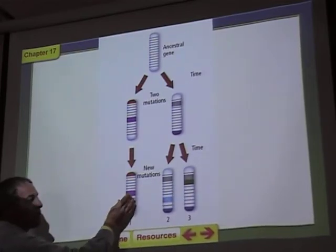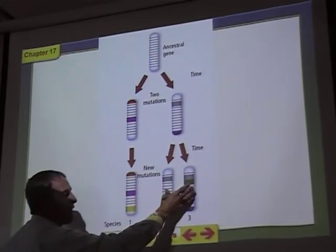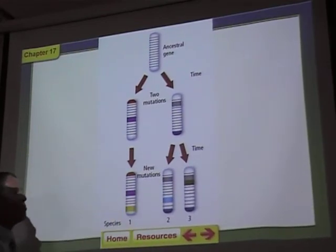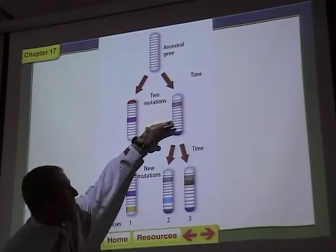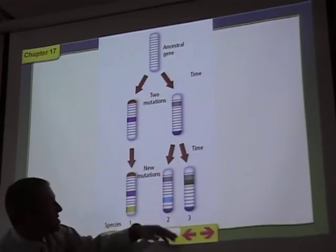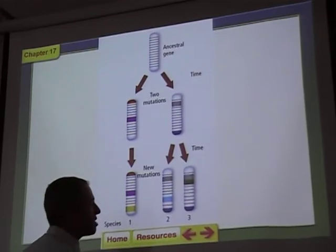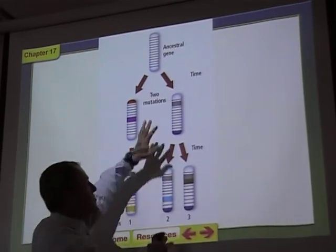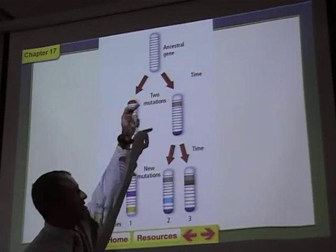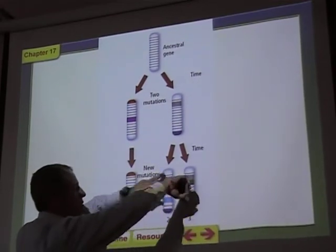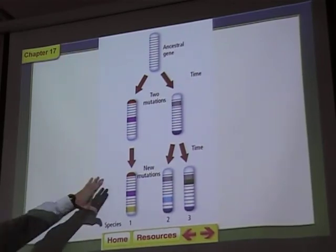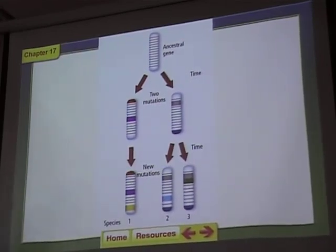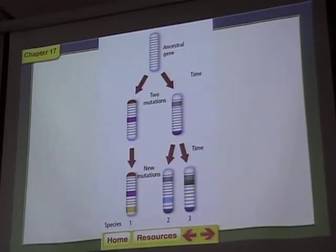An organism that doesn't have the gray and blue mutation is not closely related to those two, because that mutation came about at a specific point in time and will exist in all organisms that evolved from that ancestor. You can use this kind of molecular data to make evolutionary trees.